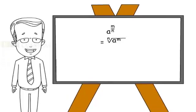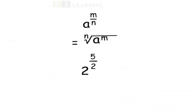According to the law, the value of 2 raised to 5 by 2 would be the square root of 2 raised to 5.